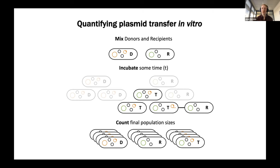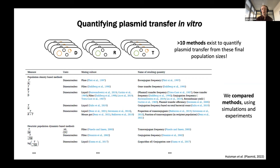How do people normally estimate plasmid transfer rates? The standard protocol: you take your donor and recipient bacteria, throw them together in whatever media you're interested in, incubate them for some time during which all bacteria grow, donors and recipients meet and conjugate, transconjugants grow and also conjugate with recipients. After a certain time you stop the process and count the final population sizes by plating on selective media or using fluorescent labels.